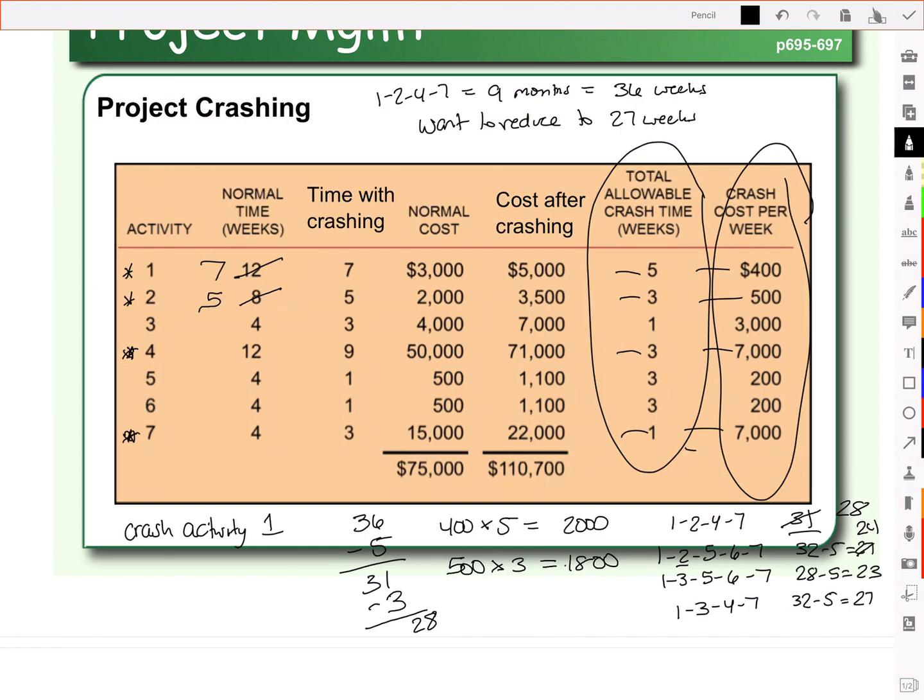Which means that as we choose to crash this project further, we need to pick from activities 4 or 7. Now activities 4 and 7 cost us the same, so it doesn't really matter which one you pick. You can pick either one. Let's pick activity 4. So we crashed 1 and 2, and now we're going to crash 4. And we'll crash activity 4 by 1 week.